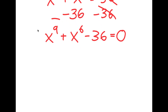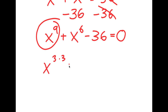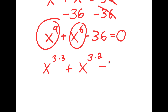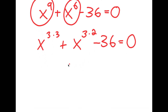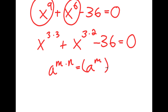From here, I'm going to rewrite x to the power of 9 as x to the power of 3 times 3, and I'm going to rewrite x to the power of 6 as x to the power of 3 times 2. Now, if I have something in the form a to the power of m times n, this is the same thing as a to the power of m to the power of n.